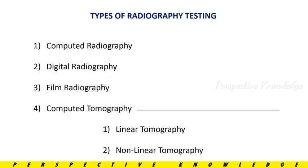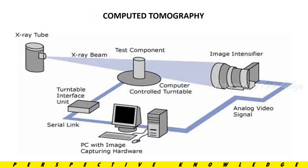Types of Radiography Testing include: Computed Radiography (CR), Digital Radiography (DR), Computed Tomography (CT) — which includes Linear Tomography and Nonlinear Tomography — and traditional Film Radiography.